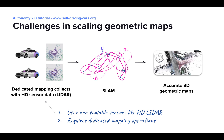Let's now look at the challenges in scaling geometric maps. While HD LiDARs bring very accurate maps, they are expensive, which means that having fleets of vehicles dedicated to mapping is also expensive, especially if we want to map large areas. The second bottleneck is the need for dedicated mapping operations — for example, we need dedicated drivers and dedicated processes to dispatch and operate the vehicles used for mapping.